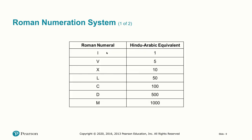Here's the familiar Roman numeral system, still in use today — like when naming the Olympics or Super Bowls. Here are the equivalents in the Hindu-Arabic system: I is 1, V is 5, X is 10, L is 50, C is 100, D is 500, and M is 1000. We'll see some applications once we get to the homework portion of the video.